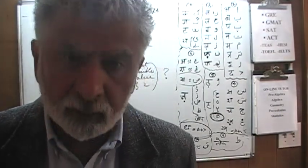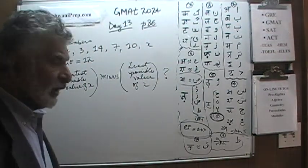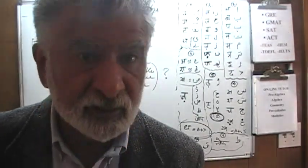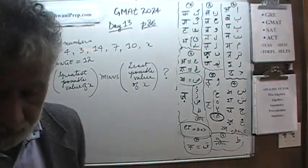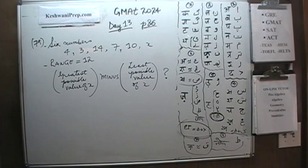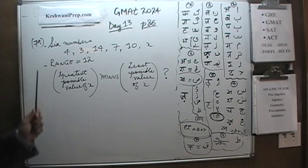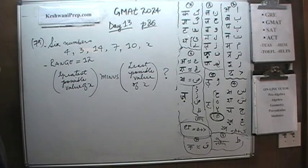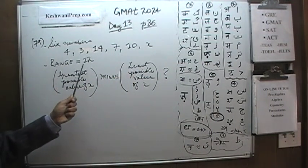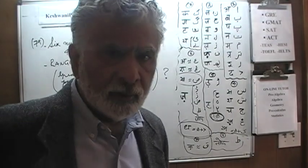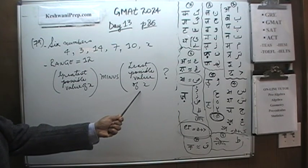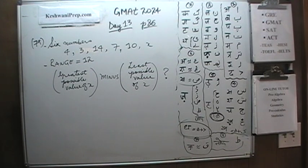Let's begin with the first problem, already on the blackboard. Number 79: We have six numbers - 4, 3, 14, 7, 10, and unknown number X. We're told that the range of these six numbers is 12, and our job is to figure out the difference between the greatest possible value of X and the smallest possible value of X.